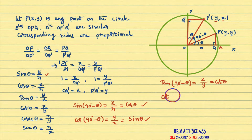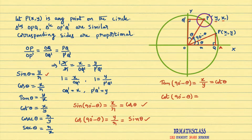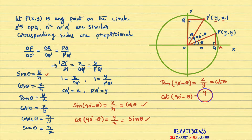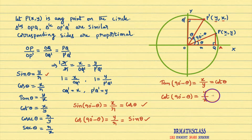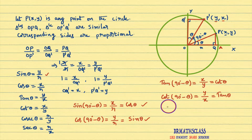Now we will find cot(90° - θ). From the definitions of trigonometric functions, cot(90° - θ) is defined as the x-coordinate of P' divided by the y-coordinate of P', which is y/x. Since y/x = tan θ, we get cot(90° - θ) = tan θ.